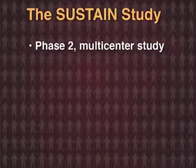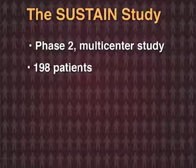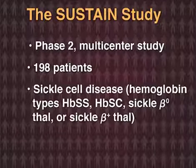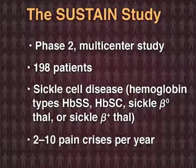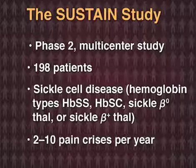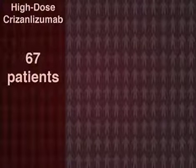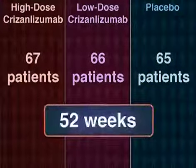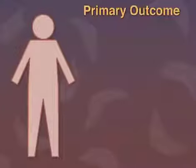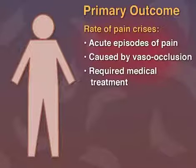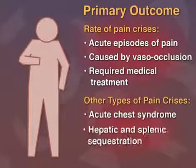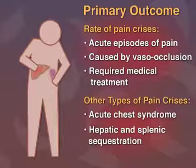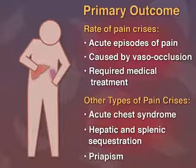The Phase II multicenter SUSTAIN study enrolled 198 patients with sickle cell disease who had from 2 to 10 sickle-related pain crises a year at baseline, and randomized them to high-dose crizanlizumab, low-dose crizanlizumab, or placebo for 52 weeks. The primary outcome was the annual rate of sickle cell-related pain crises, including acute chest syndrome, hepatic and splenic sequestration, and priapism in the high-dose crizanlizumab group as compared with the placebo group.